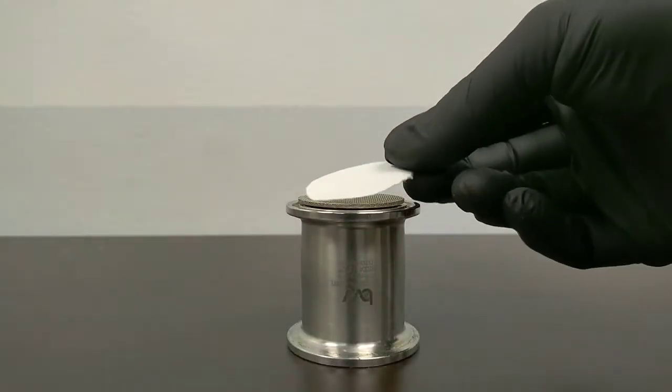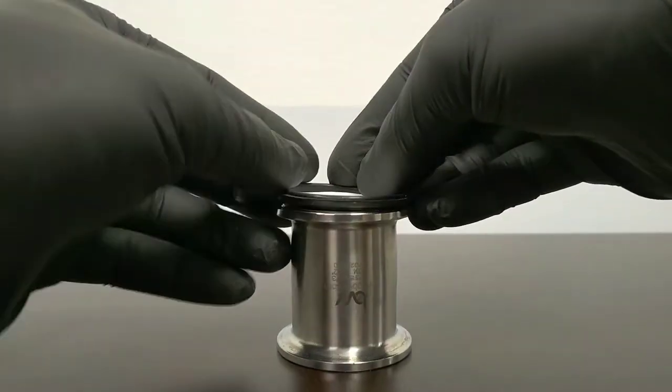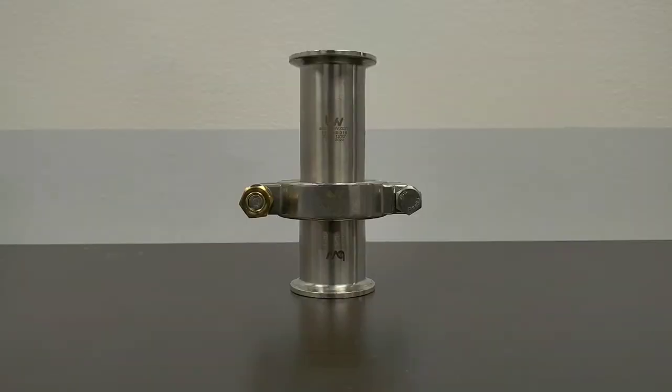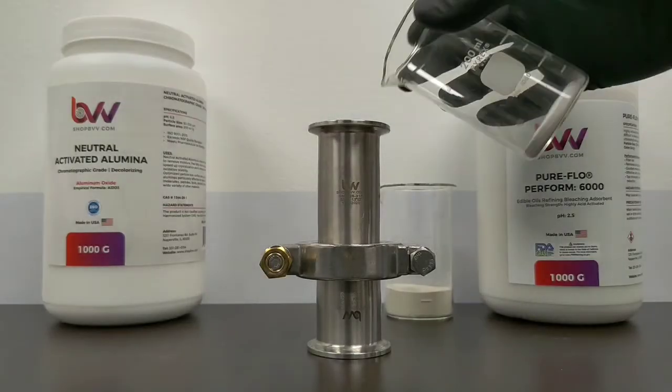How to run the Evo Mini. Start by assembling the filtration column with a 5 micron centered disc, filter paper above it, and secure it with a high-pressure clamp.